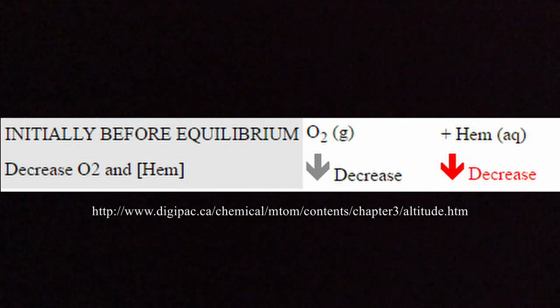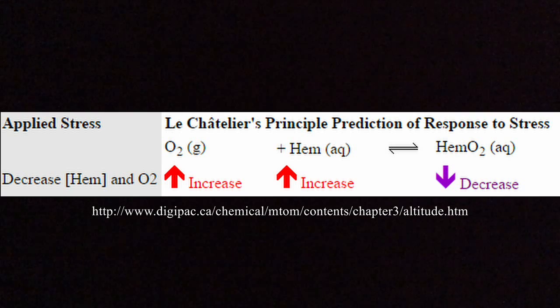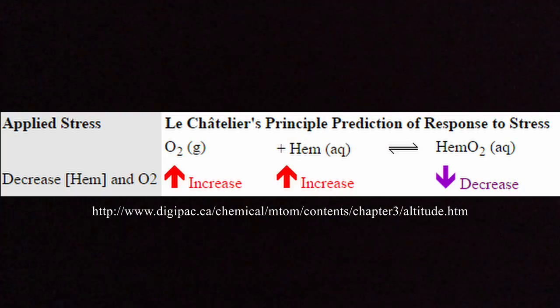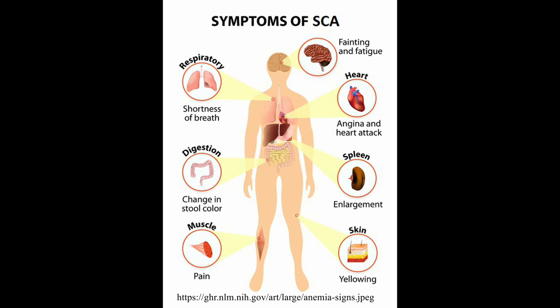SCA causes both necessary hemoglobin and oxygen to be wasted and used up. As such, the oxygenated hemoglobin must balance to maintain equilibrium. Le Chatelier's principle shows that the equilibrium must shift towards the reactants. As such, the amounts of oxygenated hemoglobin must decrease to maintain equilibrium. This leads to severe hypoxemia, causing symptoms such as pain, organ failure, and it eventually leads to an early death.